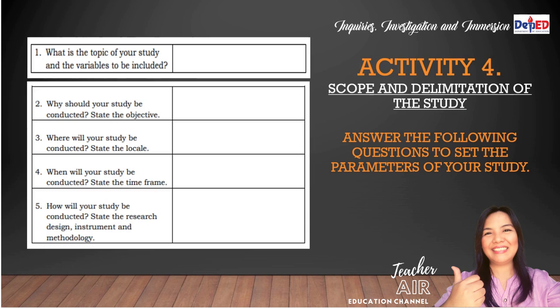Activity four is for scope and delimitation of the study. Answer the following to set the parameters of your study: number one, what is the topic of your study and the variables to be included; number two, why should your study be conducted — state the objective; number three, where will your study be conducted — state the locale; number four, when will your study be conducted — state the time frame; and number five, how will your study be conducted — state the research design, instrument, and methodology.